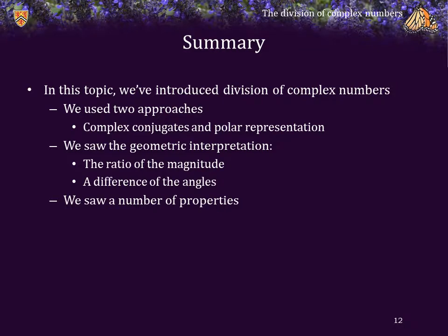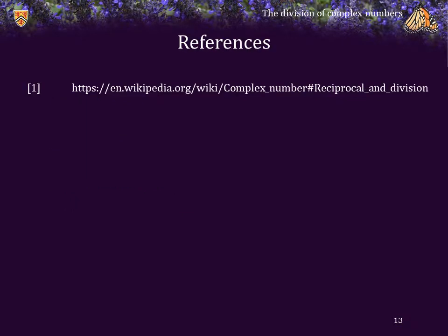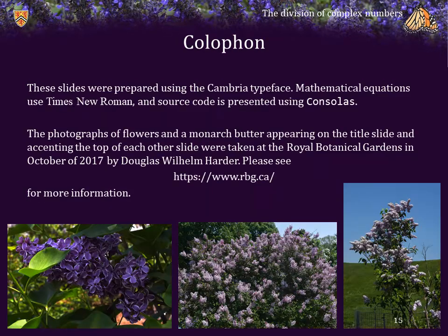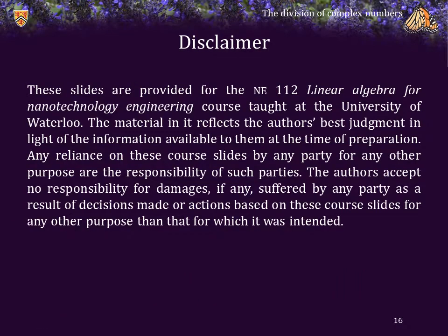In this topic, we've introduced the division of complex numbers using two approaches: the complex conjugate representation and the polar representation. We saw the geometric interpretation where the magnitude is the ratio of the two magnitudes and the angle is a difference of the angles, and we looked at two properties. Here are some references, acknowledgements, the colophon, and a disclaimer. Cheers!